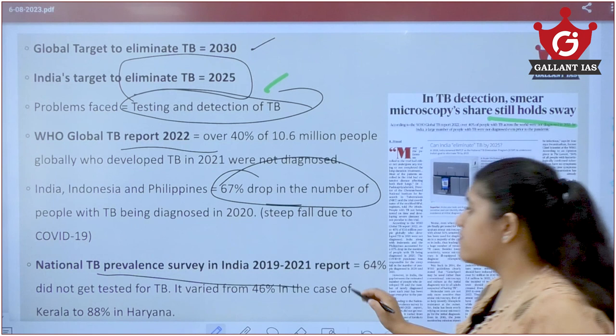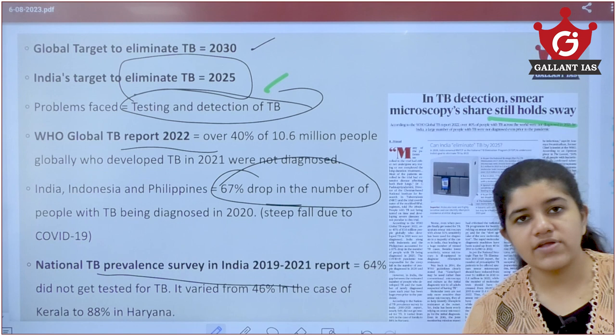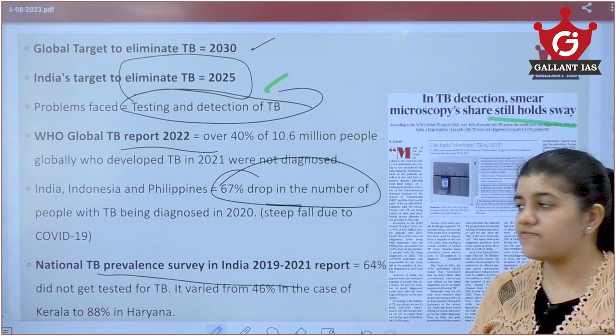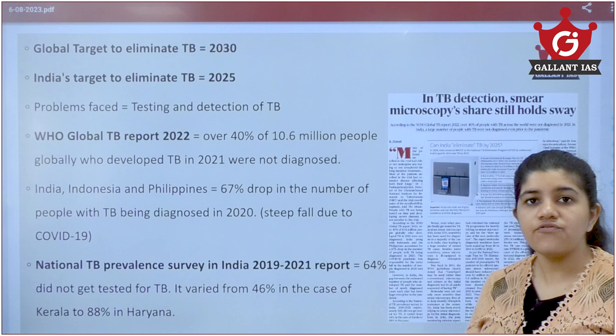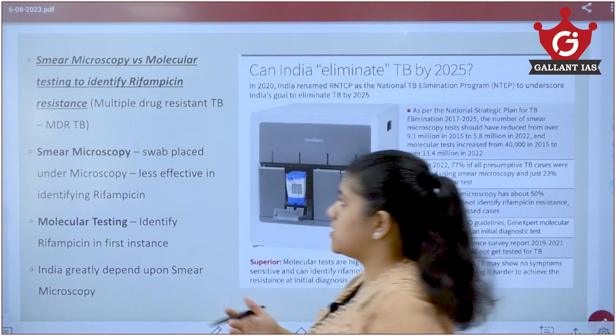India's National TB Prevalence Survey conducted in 2019–21 found that 60% of the population did not even get tested for TB. There is a large regional gap: in Kerala, only 42% were tested, while in Haryana it is about 88%. India faces a significant problem with the testing and detection of TB.